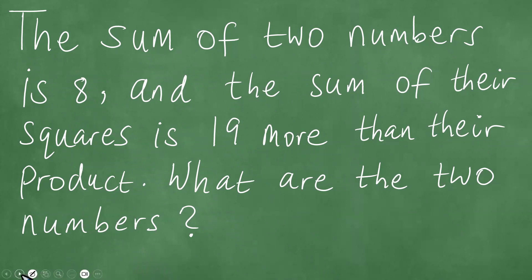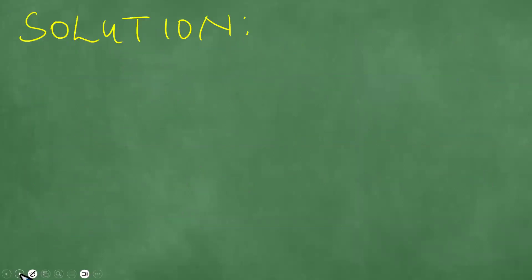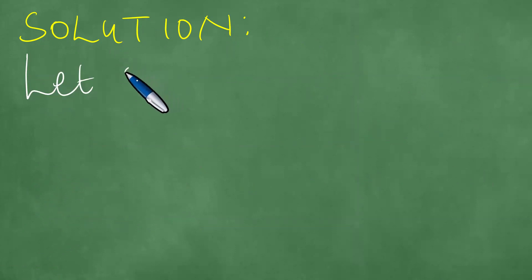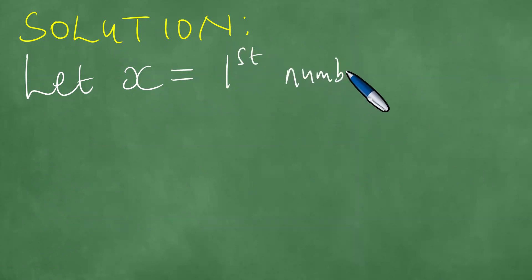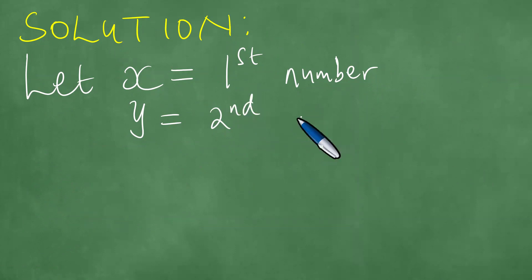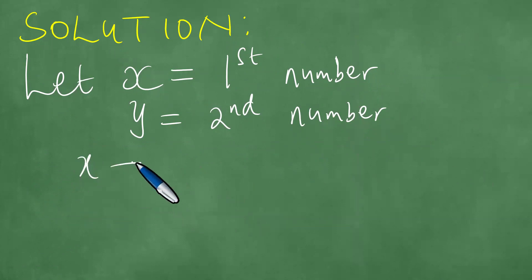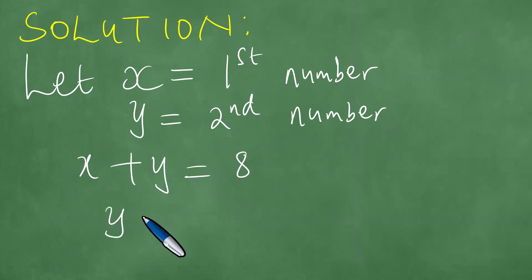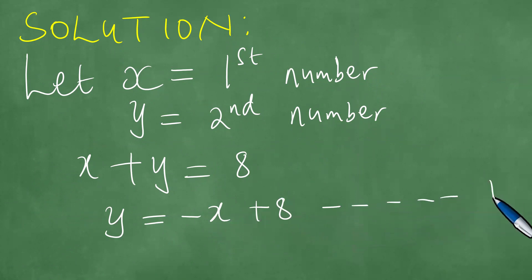We need to solve this problem. Noting first that the sum of the two numbers is 8, we start writing down the solution. Let x be equal to the first number, and y be the second number. The sum of these numbers is 8, which means we can make y the subject: y equals minus x plus 8. We call this the first equation.